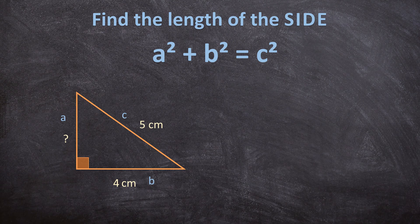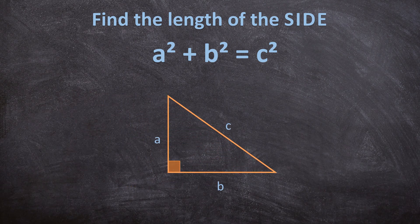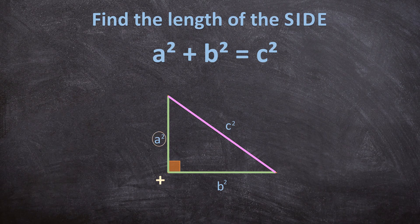Now before we start, let's look at what we already know. With a right triangle we know that A² plus B² is equal to C². But what if we need to calculate the length of A? We still use the same formula, just written differently: to calculate A, take C² and subtract B² to get the value of A².